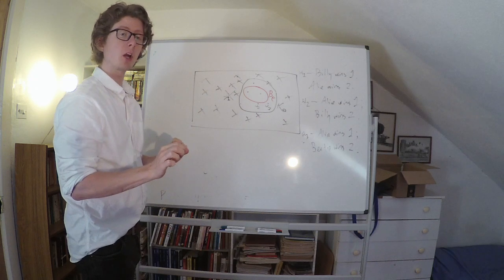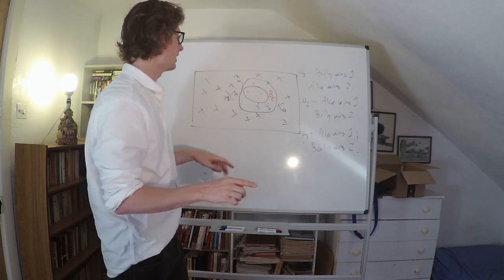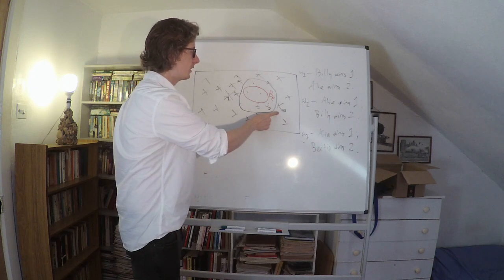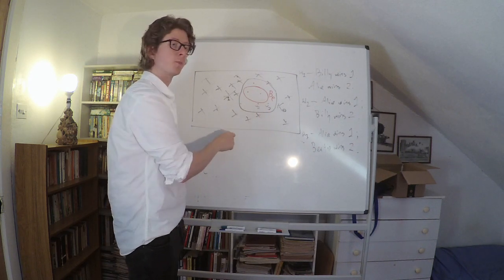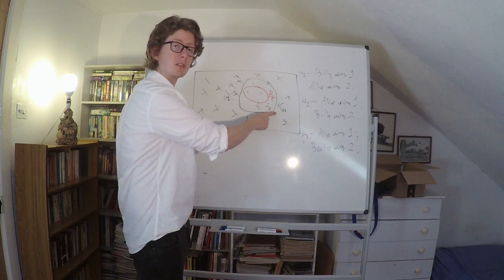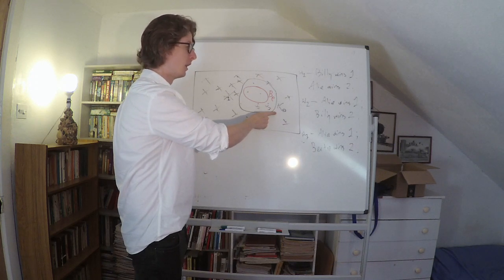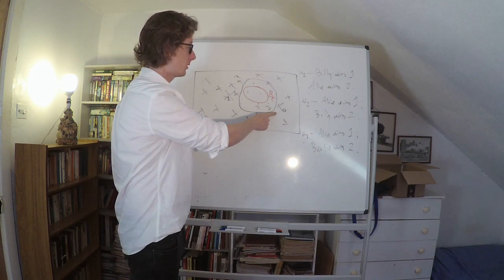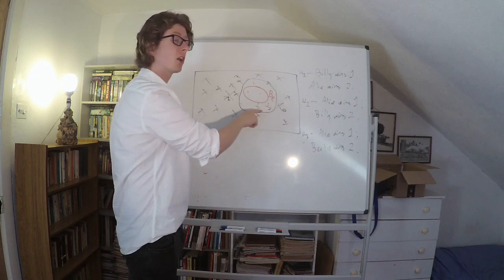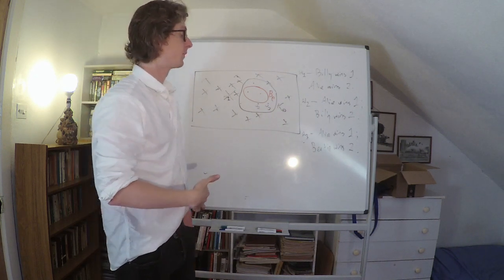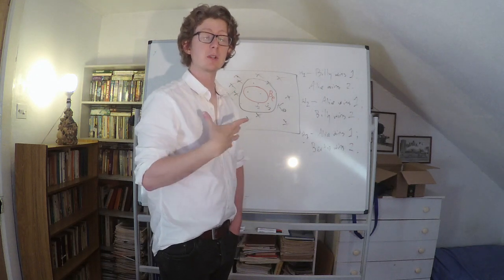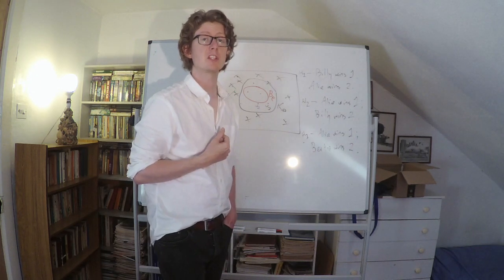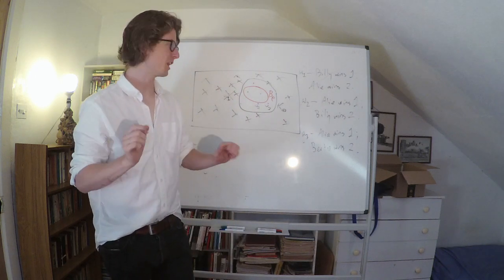One last thing to remark on before I tell you what the theory is: it's important to remember that the knowledge set and the belief set are propositions according to the possible worlds theory, because the possible worlds theory says that any set of worlds is a proposition — and these are indeed sets of worlds. That's going to be important because it will allow us to start thinking about knowledge and belief in terms of entailment. That's just a little bit of foreshadowing.